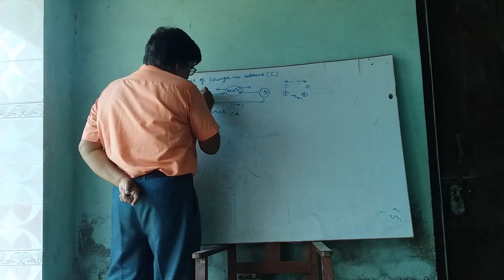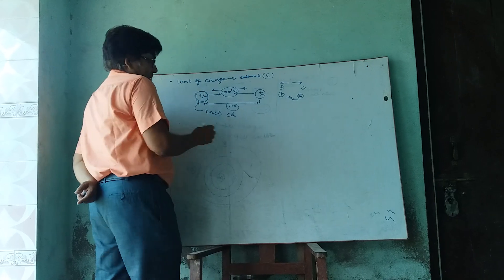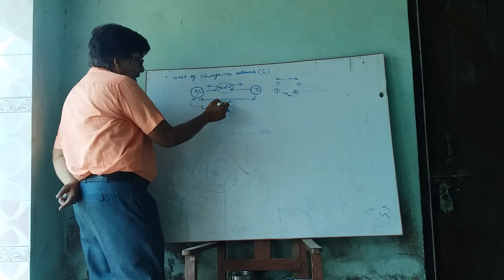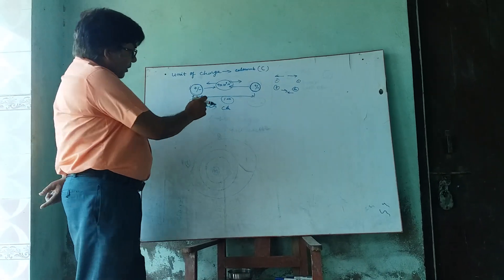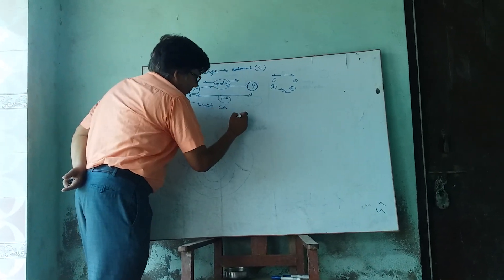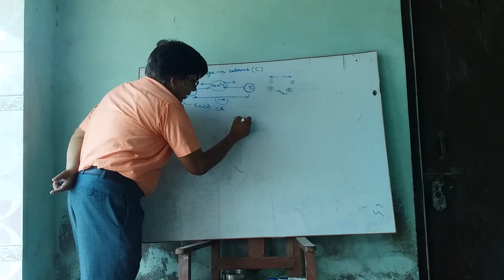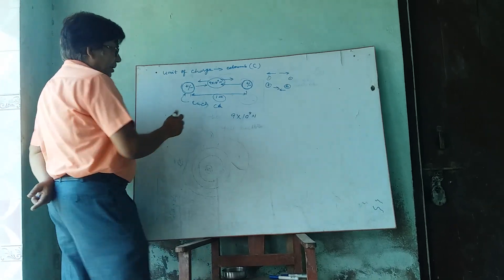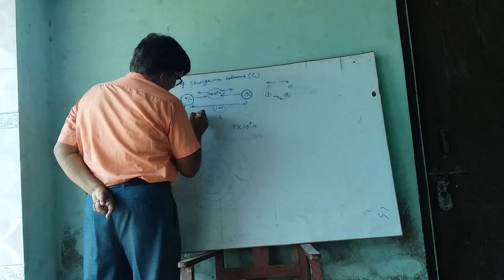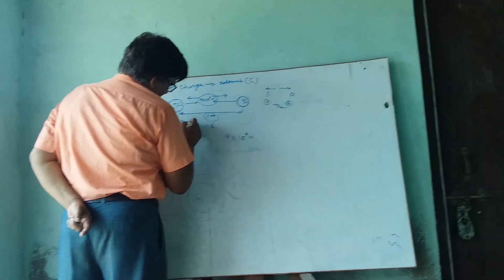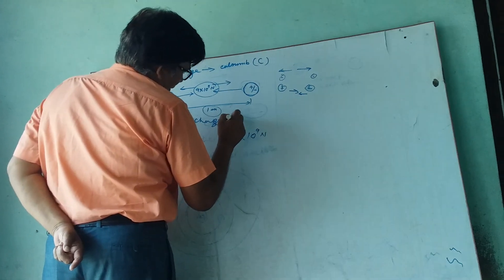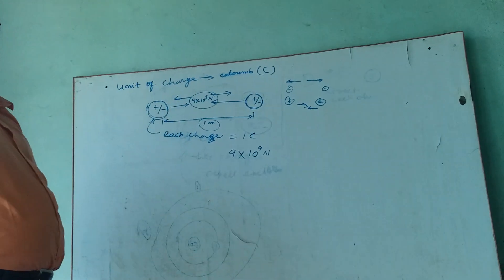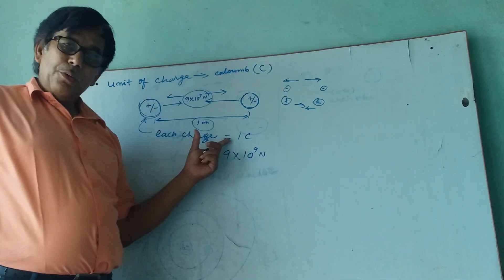If two equal charges, whether positive or negative, are placed one meter apart and the force of attraction or repulsion between them is equal to 9 into 10 to the power 9 Newtons, then each charge will be equal to 1 Coulomb.